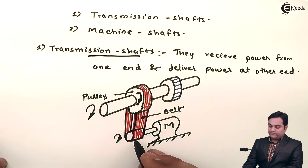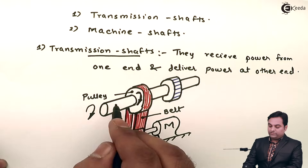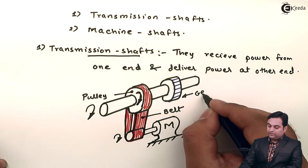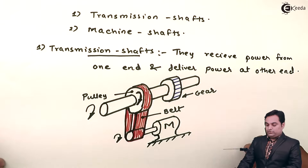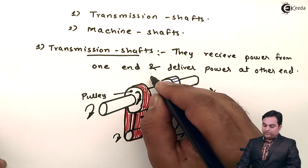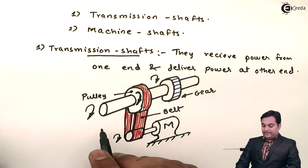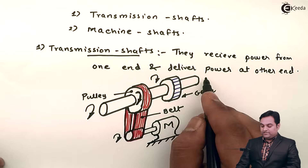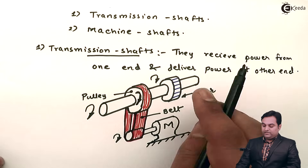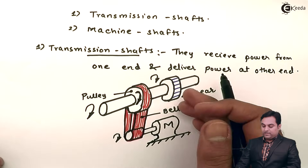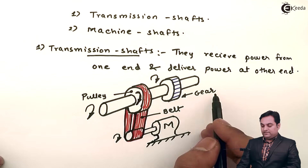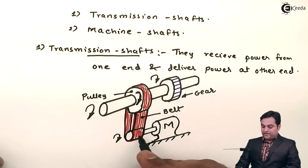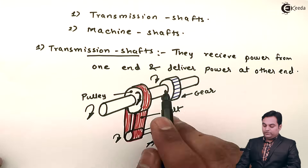Power is transferred from the motor to this shaft. On this shaft there is another member — for example, a gear. This gear starts rotating in a clockwise direction. The shaft is receiving power and rotating; at the same time, the gear on this shaft can mesh with another gear and rotate it. So this shaft is both receiving power and transmitting power — this is the explanation of a transmission shaft.